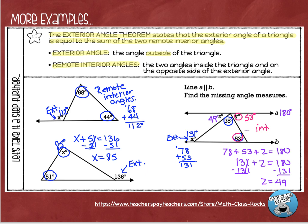Those are the two theorems we need to learn about for triangles. First: triangles always equal 180 degrees when you add the three interior angle measures together. As for the exterior angle, remember it is outside the triangle. To find its measure, find the two interior angles across from it and add them together — that gives you the exterior angle measure. Hopefully this is helpful. You can rewind the video and watch any example again. See you guys next time!